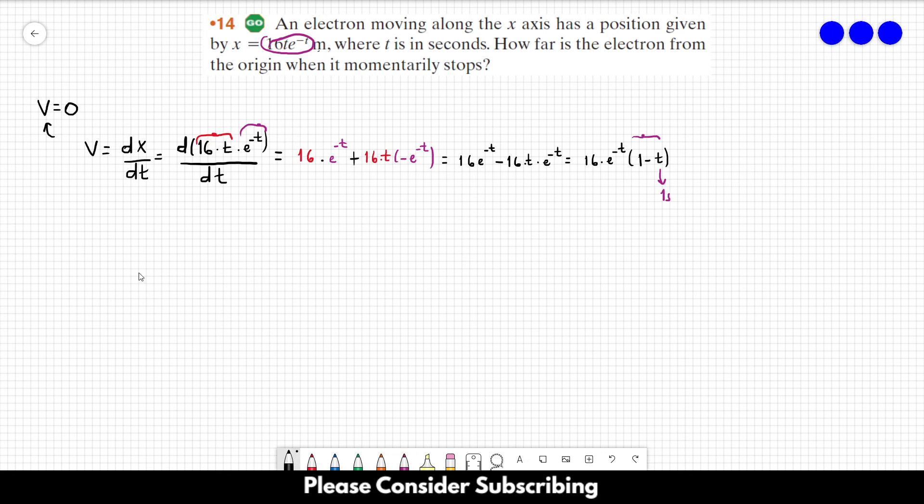So we just have to replace t equals 1 in this equation. x equals 16 times t times e to the power of minus t. We just have to replace time for 1 second. And that's it. So what we want to do is x at 1, which is equal to 16 times 1 times e to the power of minus 1. And if you do this calculation, you will find roughly 5.9 meters. And this is the answer of this exercise.